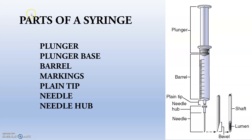Moving to the anatomy of a syringe — that is the parts of a syringe. We have the plunger, which we hold back and push inward, and the plunger base. Then there is the barrel, where we can see the volume markings. The barrel is the place where any liquid is drawn into and stored for injection.